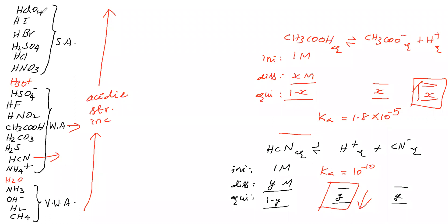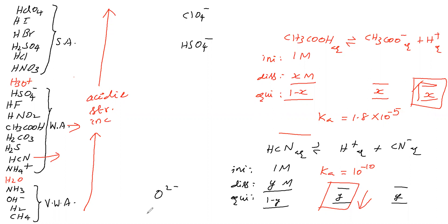Now we will see the conjugate bases of these acids and their basic strength. HClO4 is an acid; remove one H⁺ and its conjugate base is ClO4⁻. For H2SO4, remove one H⁺ and the conjugate base is HSO4⁻. For OH⁻ treated as an acid, it donates H⁺ and what remains is O²⁻ — that is its conjugate base. For H2, its conjugate base is H⁻.